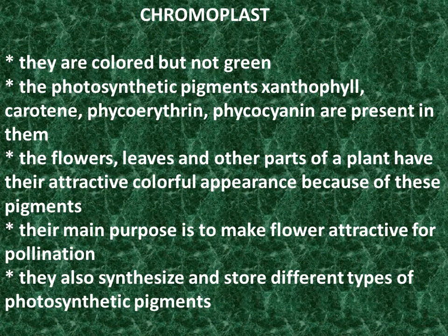Chromoplast: They are colored but not green. The photosynthetic pigments xanthophyll, carotene, phycoerythrin, and phycocyanin are present in them. The flowers, leaves, and other parts of a plant have their attractive, colorful appearance because of these pigments. Their main purpose is to make flowers attractive for pollination. They also synthesize and store different types of photosynthetic pigments.